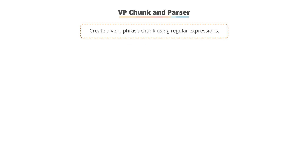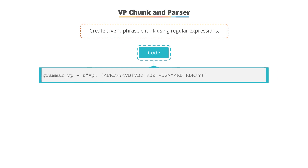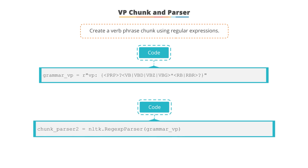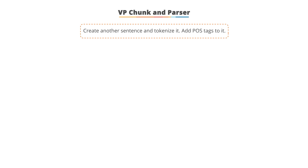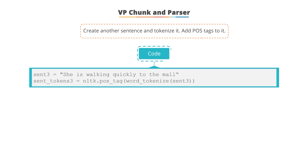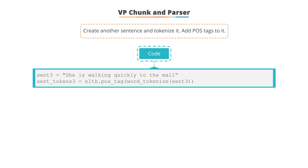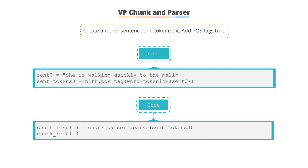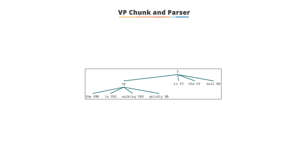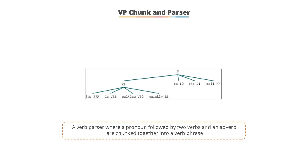We create a verb phrase chunk using regular expressions defined as an optional personal pronoun followed by zero or more verbs of any type, followed by any type of adverb. We create another chunk parser and pass the verb phrase string. A new sentence 'She is walking quickly to the mall' is created, tokenized, and POS tags are added. Using the verb phrase parser, the parse tree shows a pronoun followed by two verbs and an adverb chunked together into a verb parse.